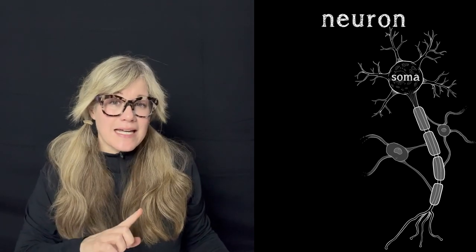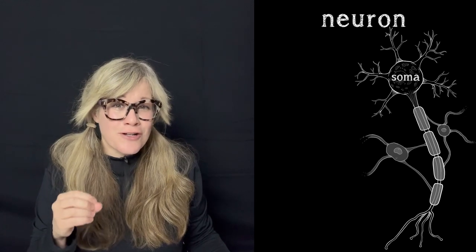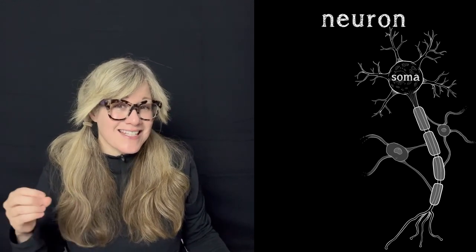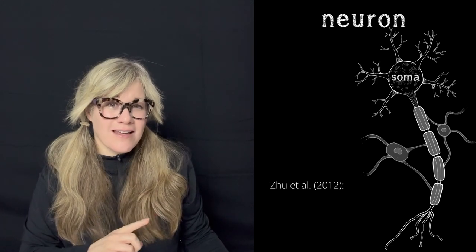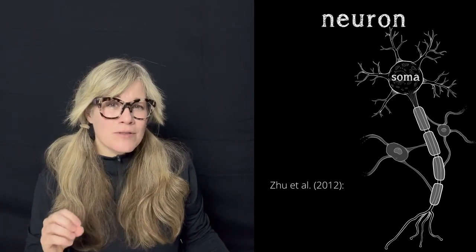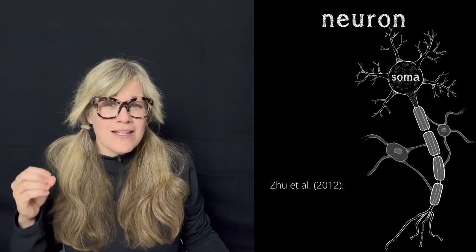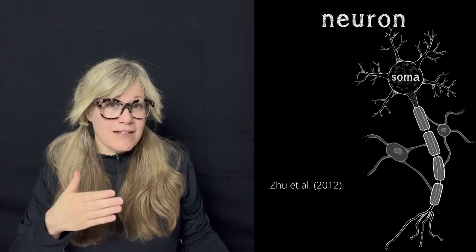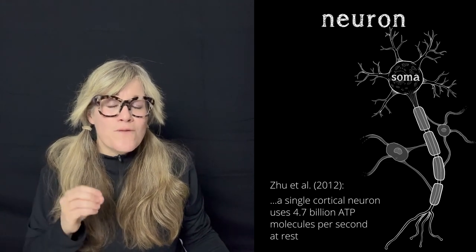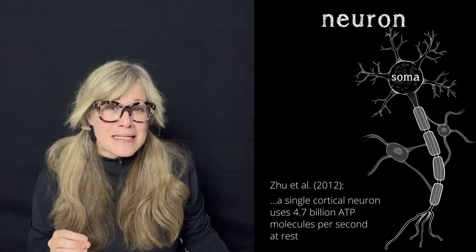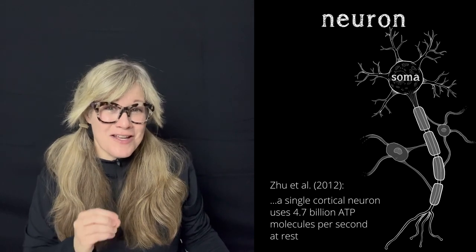But to give you an idea of the amount of activity going on, we can look at the kind of energy neurons consume in just a resting state. For that, we turn to a study by Zhu and colleagues. They were able to calculate that a single cortical neuron — so a neuron in the cortex of the brain, like our example — utilizes approximately 4.7 billion ATP molecules per second in a resting human brain.